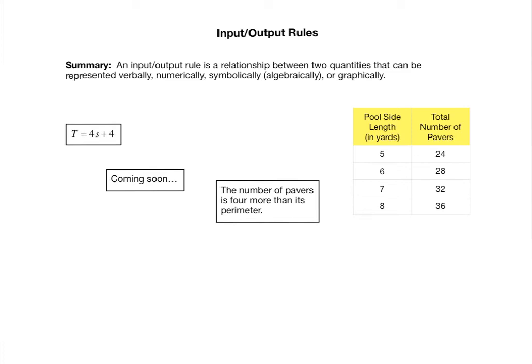So what have we done so far? This was one of our representations right here. This was a numerical representation, this is an input-output table. So that's our numerical representation of the rule. This right here we did, this was our symbolic or algebraic representation of the rule. So the relationship between poolside length and total number of pavers, we represented it numerically and we represented it symbolically.